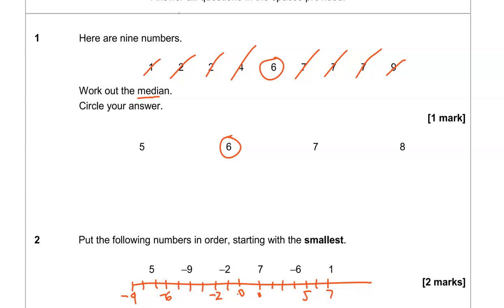So as you can see the smallest number would be negative nine, then negative six, then negative two, then we'd have one, five, and seven. We'll write the numbers out again just to make it clear. So negative nine, negative six, negative two, one, five, seven. So we don't need to include the zero. I'll just put it there for reference.